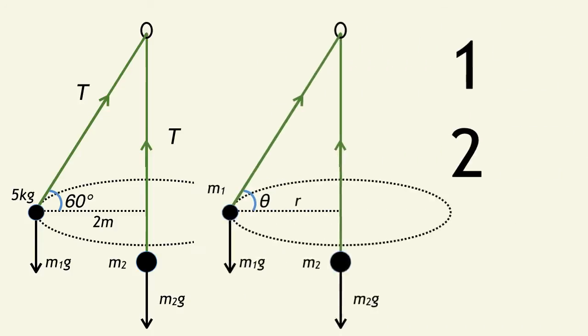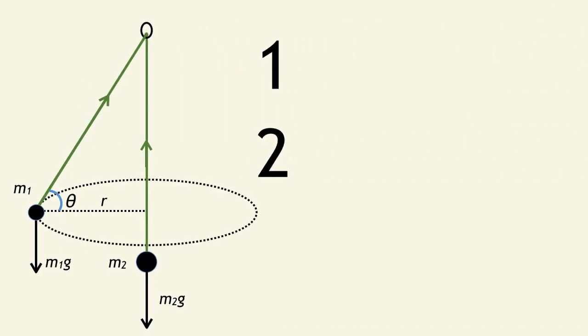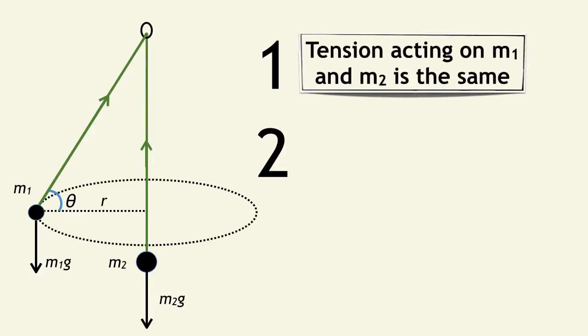Let's finish this video with some tips on how to solve these questions. The key tip is that the tension acting on M1 is the same as the tension acting on M2 because it's an inextensible string.